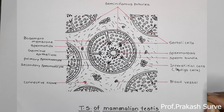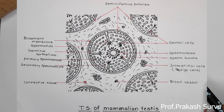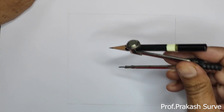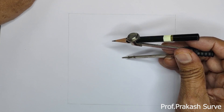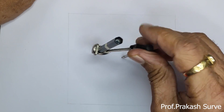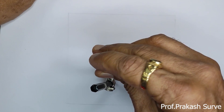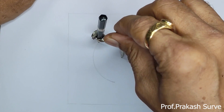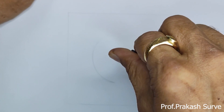Welcome dear student. Today we'll see about how to draw mammalian testes — TS of testes, or transverse section of the mammalian testes — easy way, step by step. First we'll make a square, and then at the center we'll draw one circle, which indicates a seminiferous tubule.